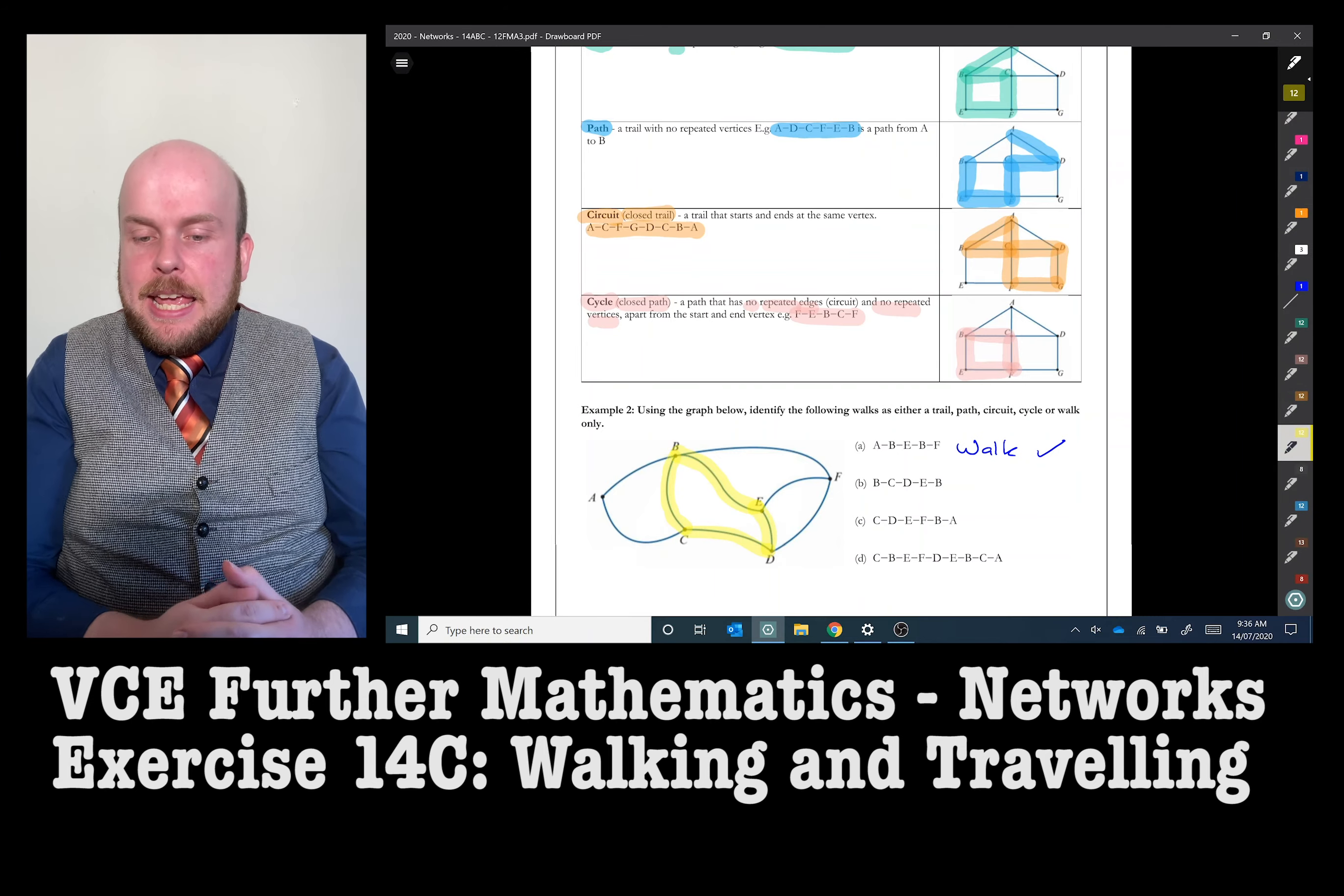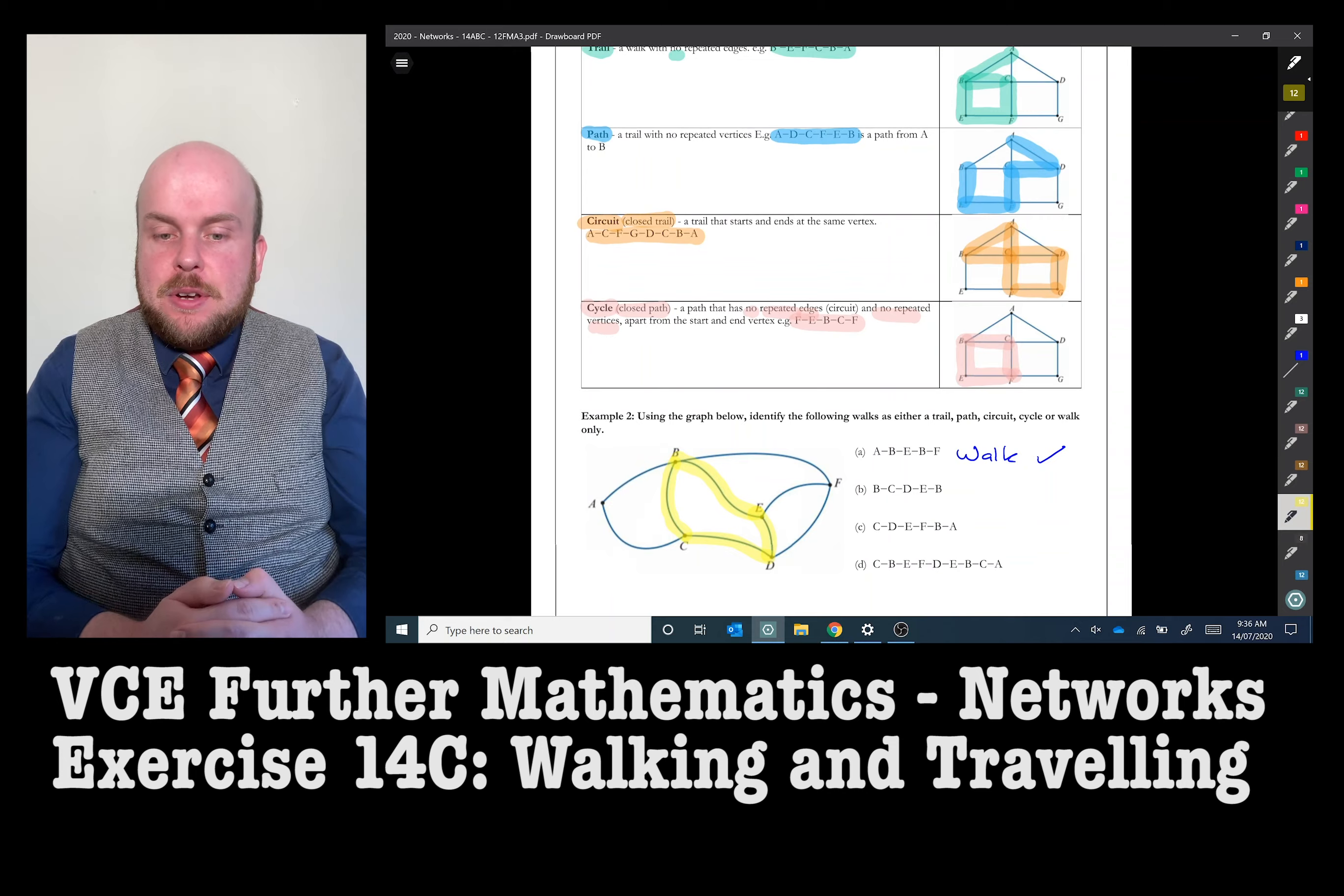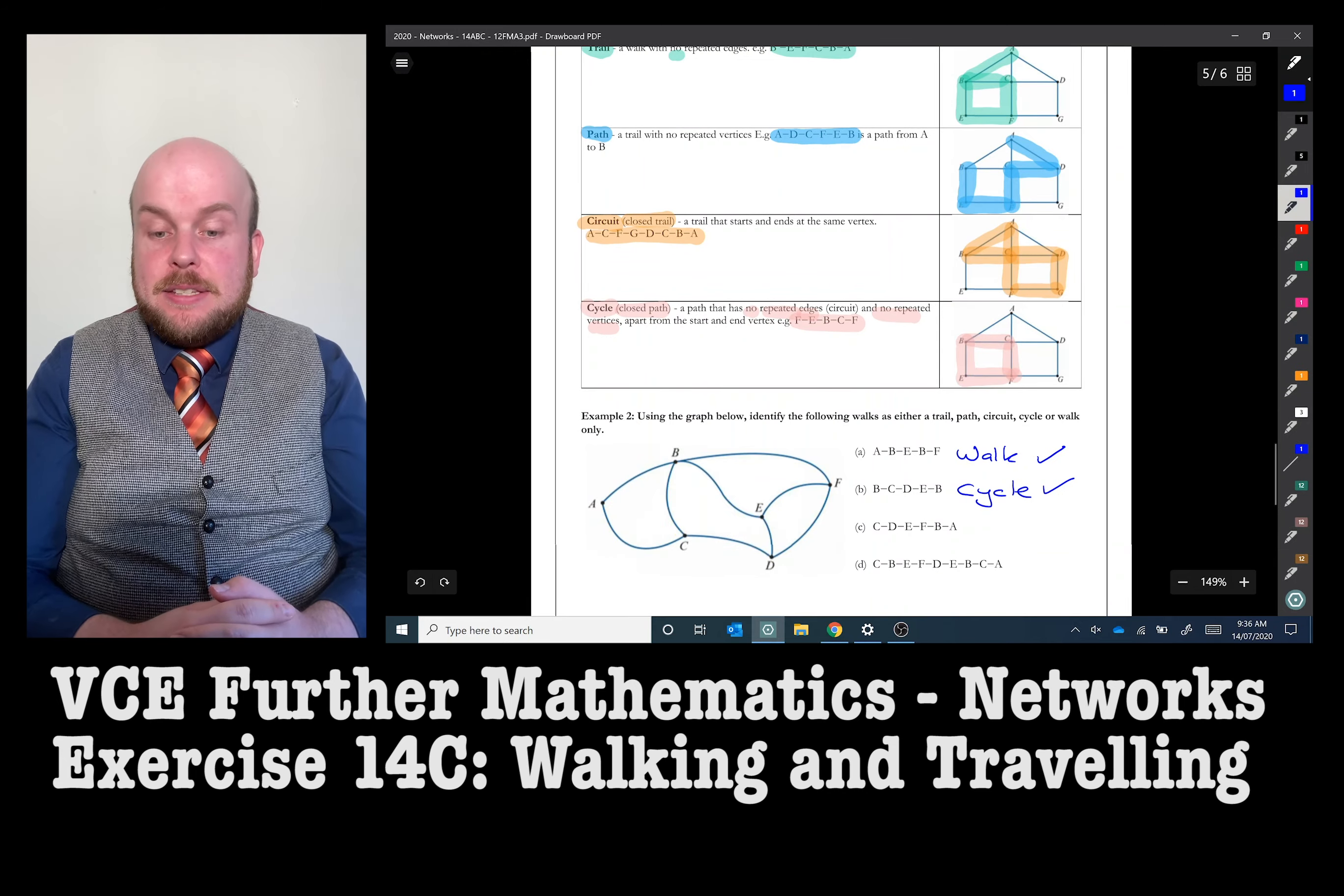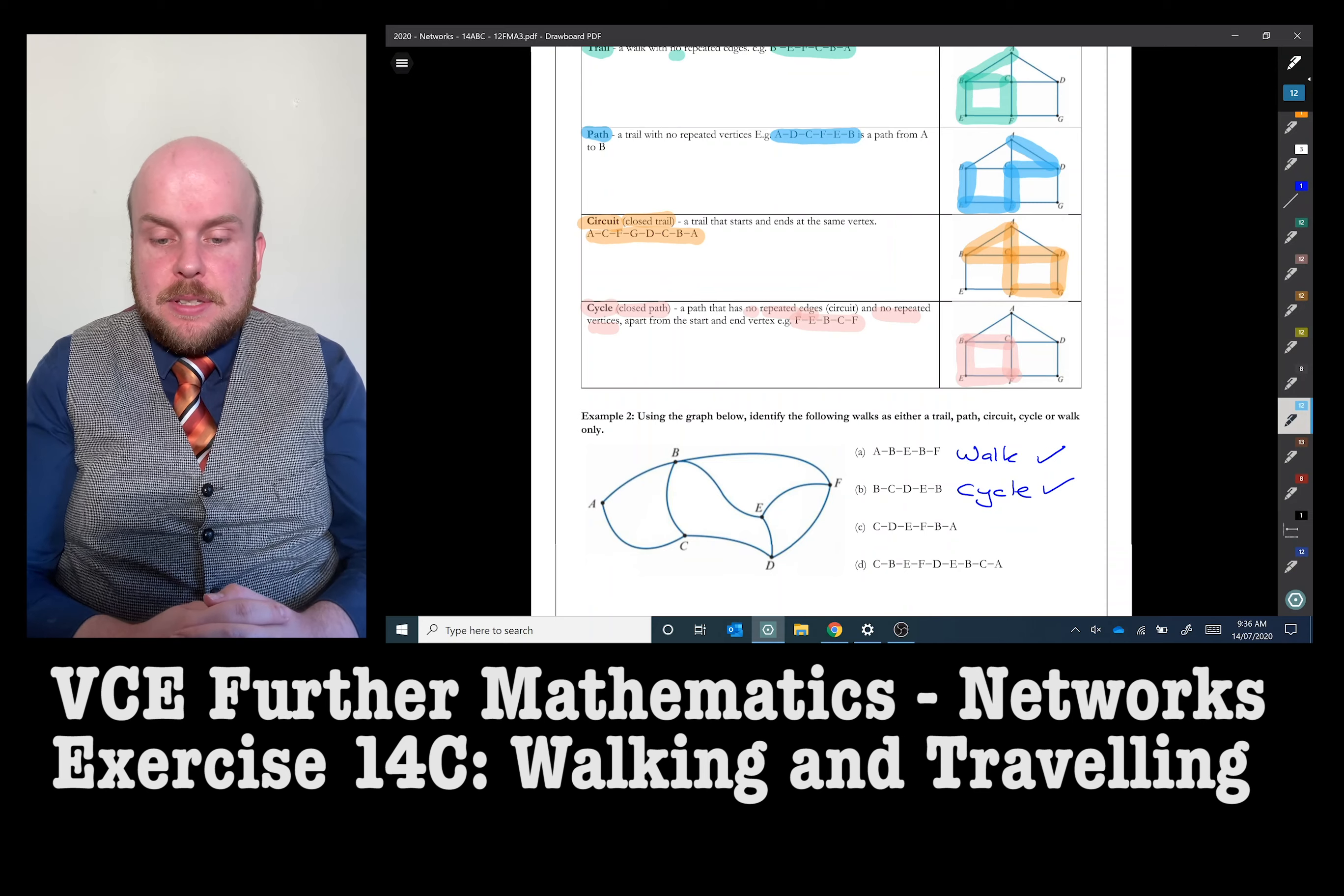B-C-D-E-B, while that has no repeated edges and no repeated vertices, so therefore it starts and ends at the same vertex, so it's a cycle.